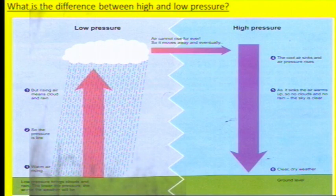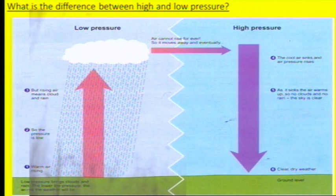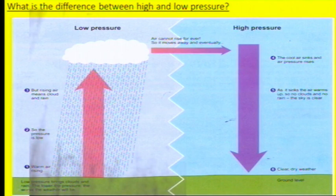Depending on the atmospheric pressure — whether we've got low pressure or high pressure — it can determine what the weather is going to be like in an area. In a low pressure system we have rising air. If the air is rising and evaporating, it's going to condense to form clouds and we're going to get lots of rain, which can lead to a depression.